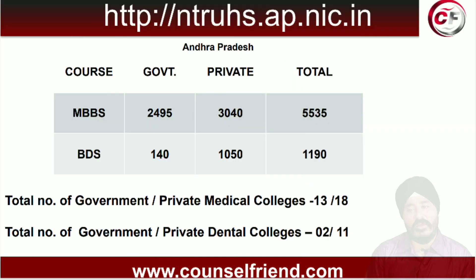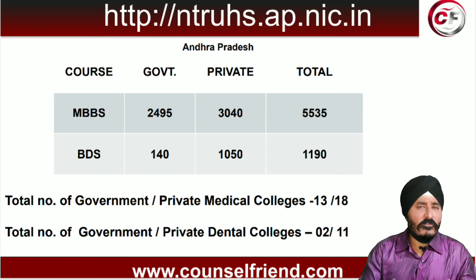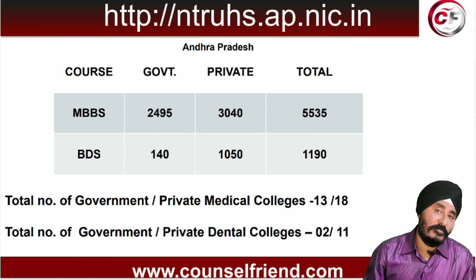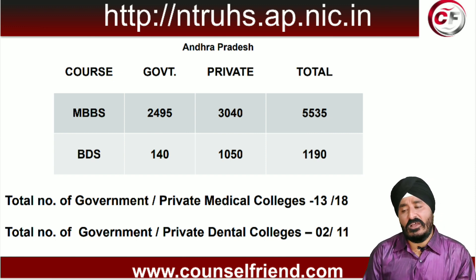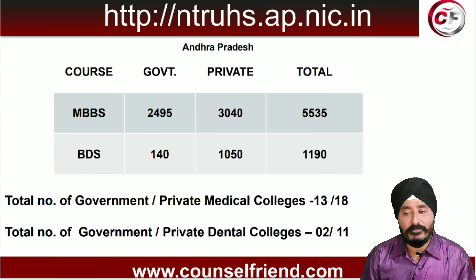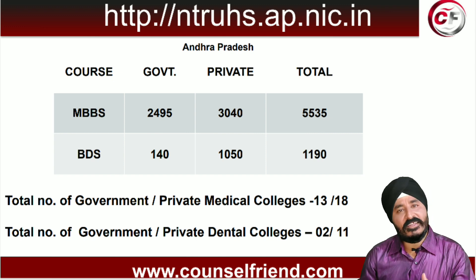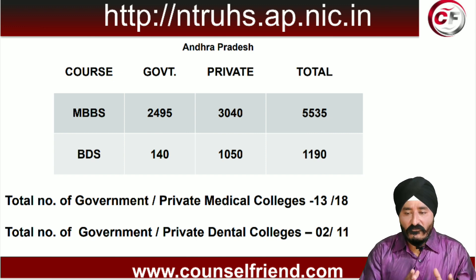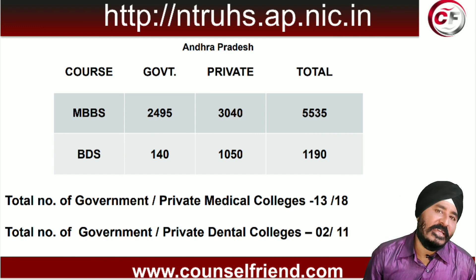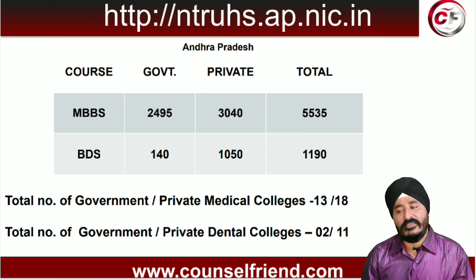For Andhra Pradesh, the counselling website you have to apply through is ntruhs.ap.nic.in. Now for the seat matrix: there are 2495 MBBS seats in government medical colleges and 3040 seats in private medical colleges, giving a total of 5535 MBBS seats in Andhra Pradesh. For BDS, there are 140 seats in government dental colleges and 1050 seats in private dental colleges, totalling 1190 seats. There are 13 government medical colleges, 18 private medical colleges, 2 government dental colleges, and 11 private dental colleges in Andhra Pradesh.